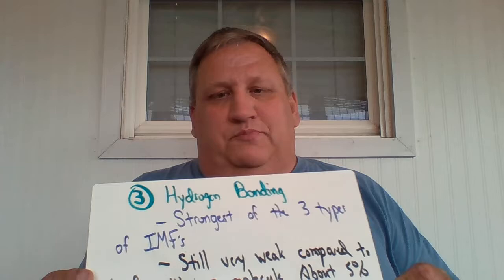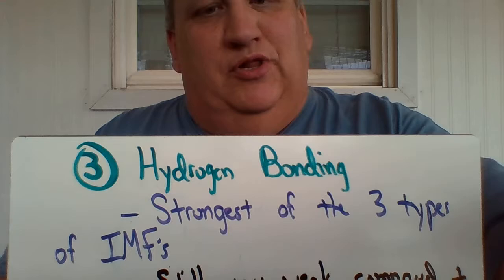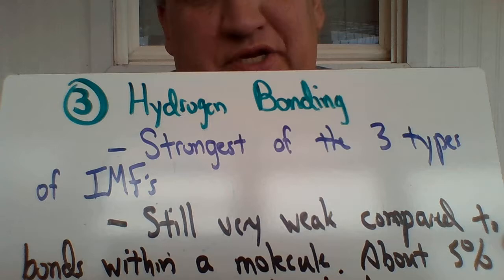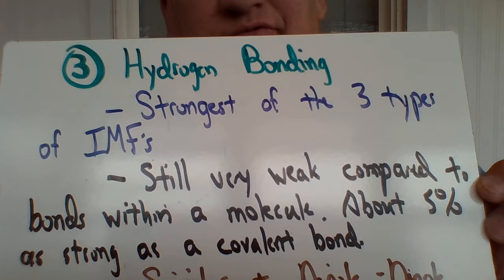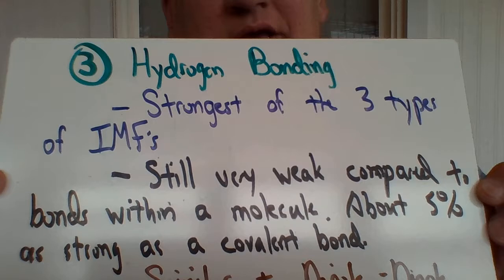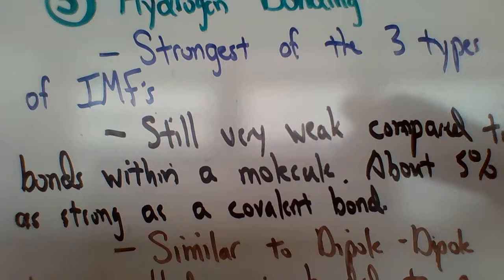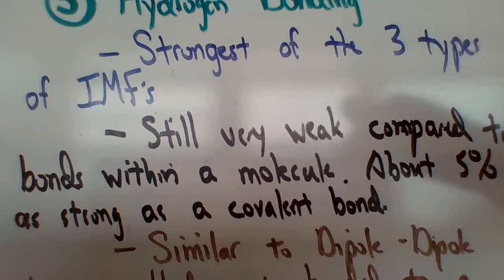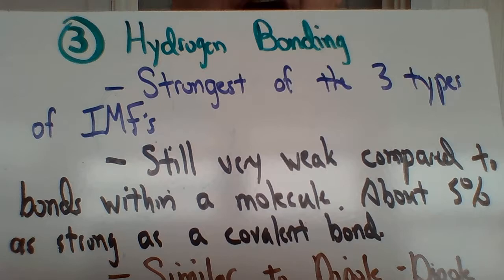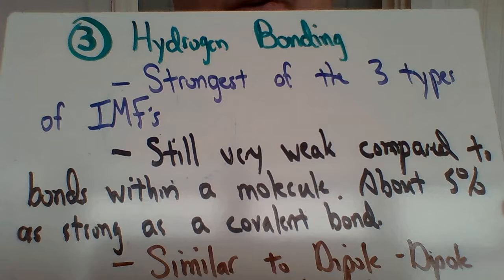Today we're going to look at a special dipole-dipole situation called hydrogen bonding. This is the third type of intermolecular forces and the strongest of the three — stronger than both dispersion and dipole. Of course, the size of the molecule and degree of polarity still come into play, but it's a special relationship. It's still weak compared to an actual bond inside a molecule — about five percent of a typical covalent bond.